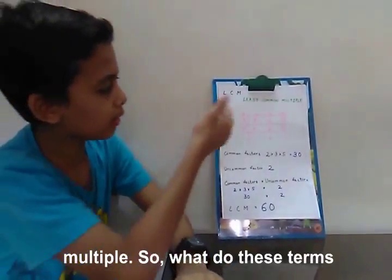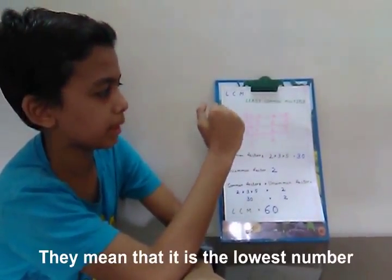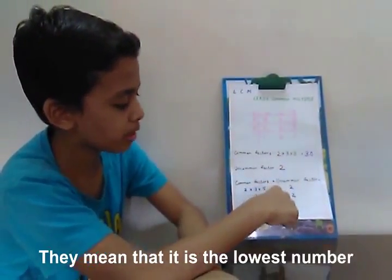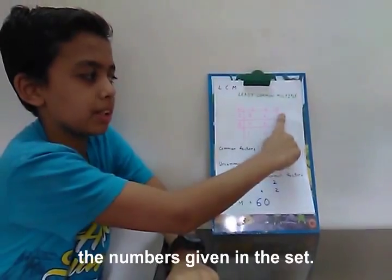So what do these terms mean? They mean that it is the lowest number which is the multiple of all the numbers given in the set.